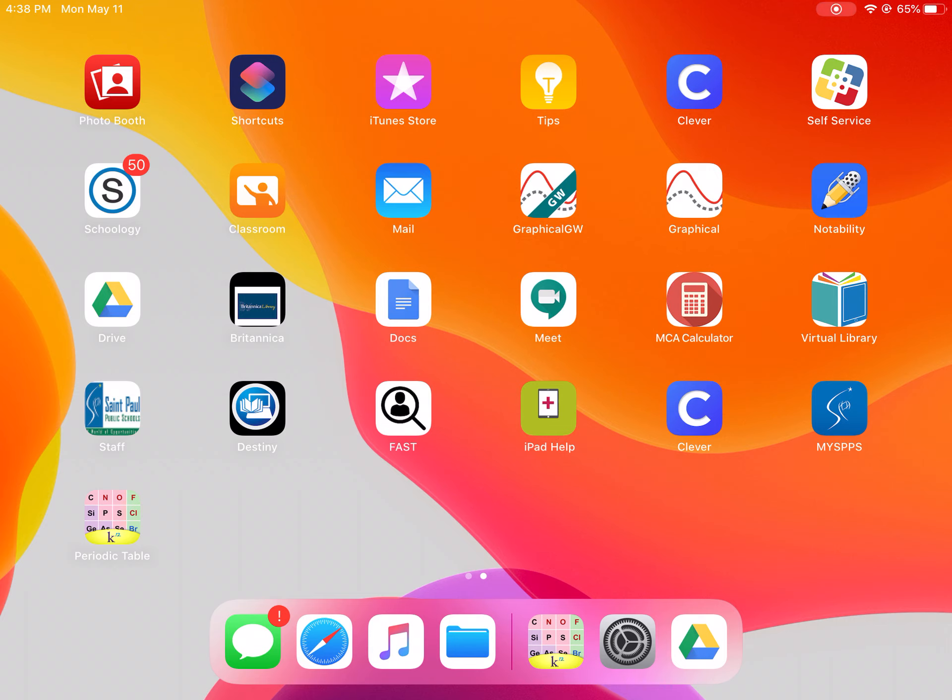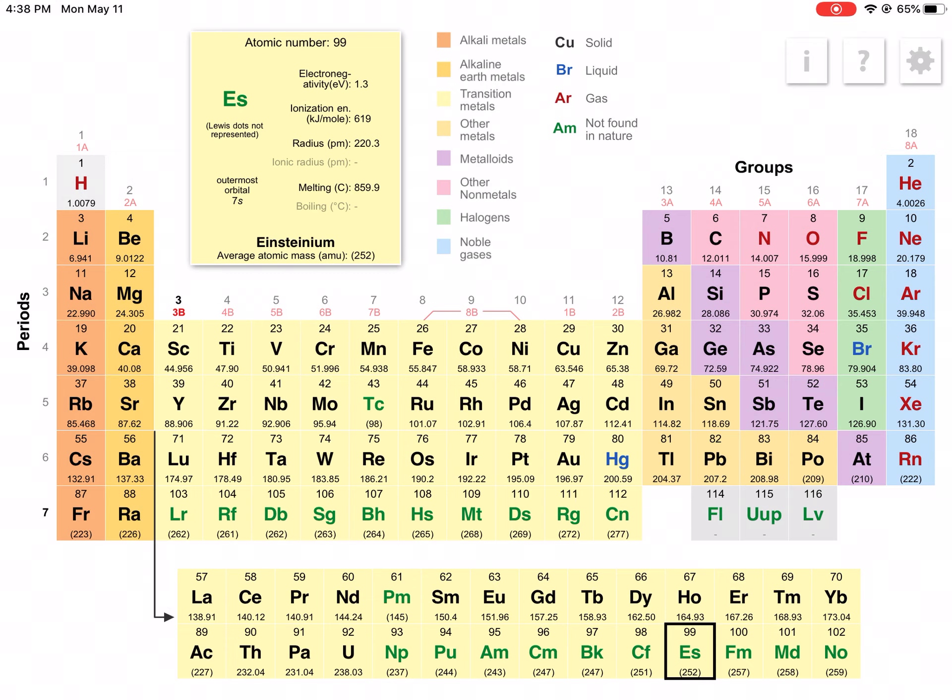Now one neat tool that I found was that there's a periodic table built right into your iPad. You can kind of see mine in the bottom left hand corner here. You can also download that from self-service if you don't know where to find that. But here I'm going to click on that app right here and what you should get is a periodic table that looks kind of like this.